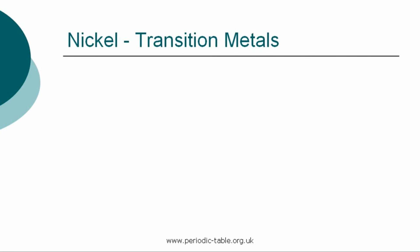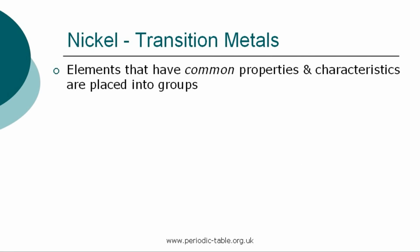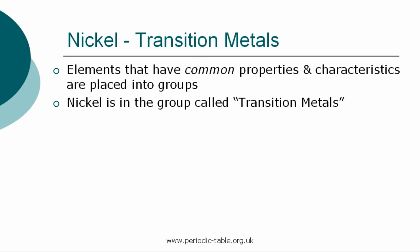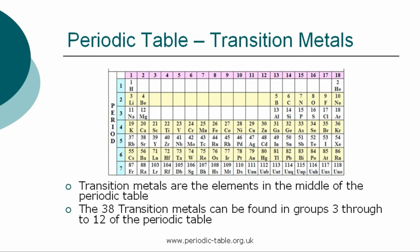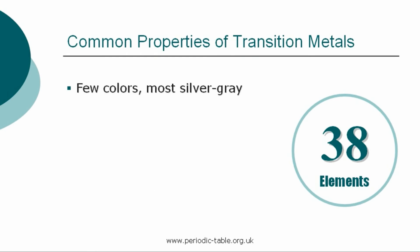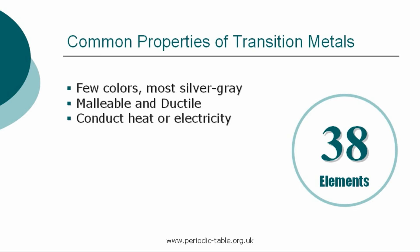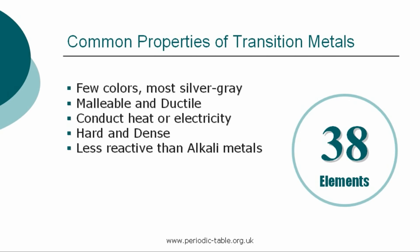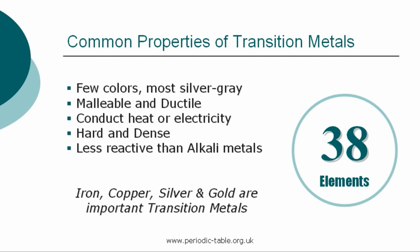Once the properties of an individual element have been identified, it is placed into a group of elements which have common properties and characteristics. Nickel is in the group called the transition metals. The 38 elements classified as transition metals are found in the middle of the periodic table in groups 3 through 12. Most of them are silver-gray or silver-bluish. As with all metals, the transition elements are ductile and malleable and good conductors of electricity and heat. They are generally hard and dense and less reactive than the alkali metals. Iron, copper, silver, and gold are important transition metals.